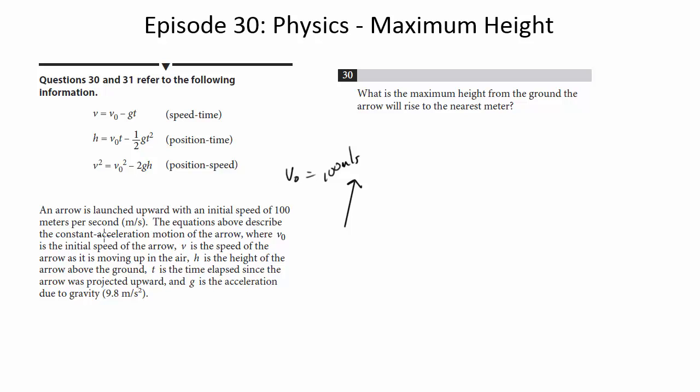V is the speed of the arrow as it is moving up in the air. H is the height of the arrow above the ground. T is the time elapsed since the arrow was projected upward. And G is the acceleration due to gravity, which is 9.8.